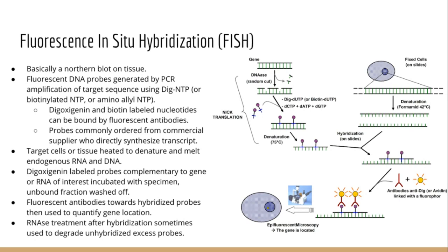This technique allows sub-cellular localization of mRNA, although it can also be applied to DNA. This technique is not about necessarily quantifying the amount of DNA or RNA, but rather checking where the transcript is located. If you want to see how much DNA or RNA is in your sample, you would do a northern blot or a qRT-PCR. FISH is used to see exactly where your mRNA is found. It is most common in embryology, for example, to see when and where a certain gene is expressed during development.